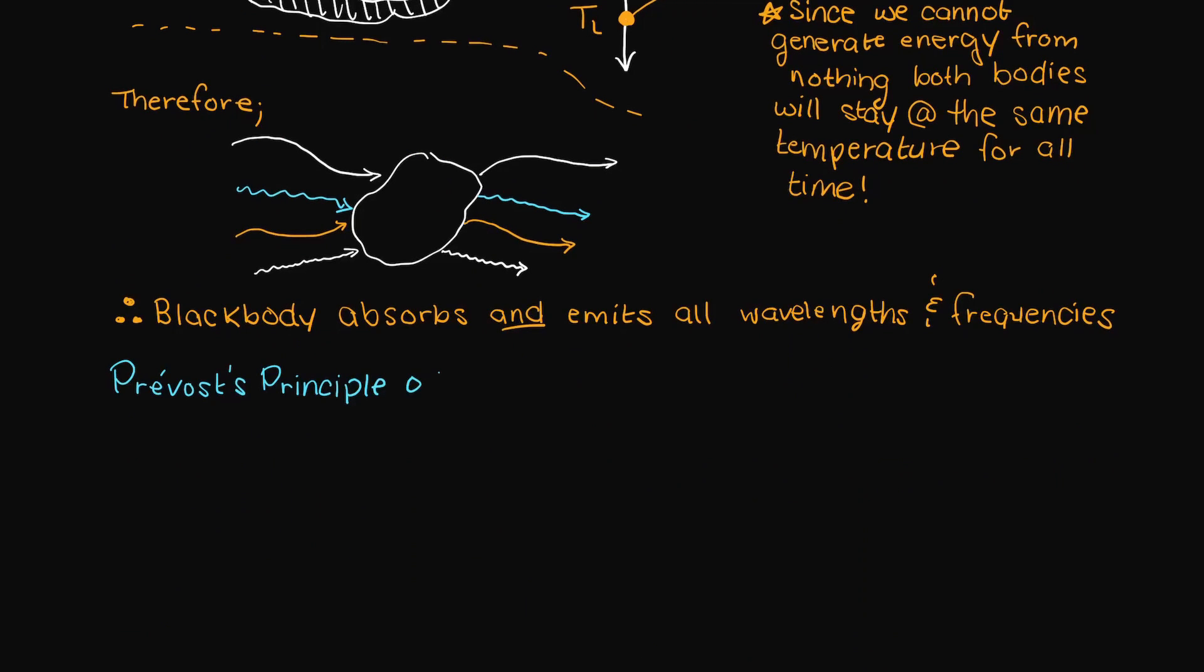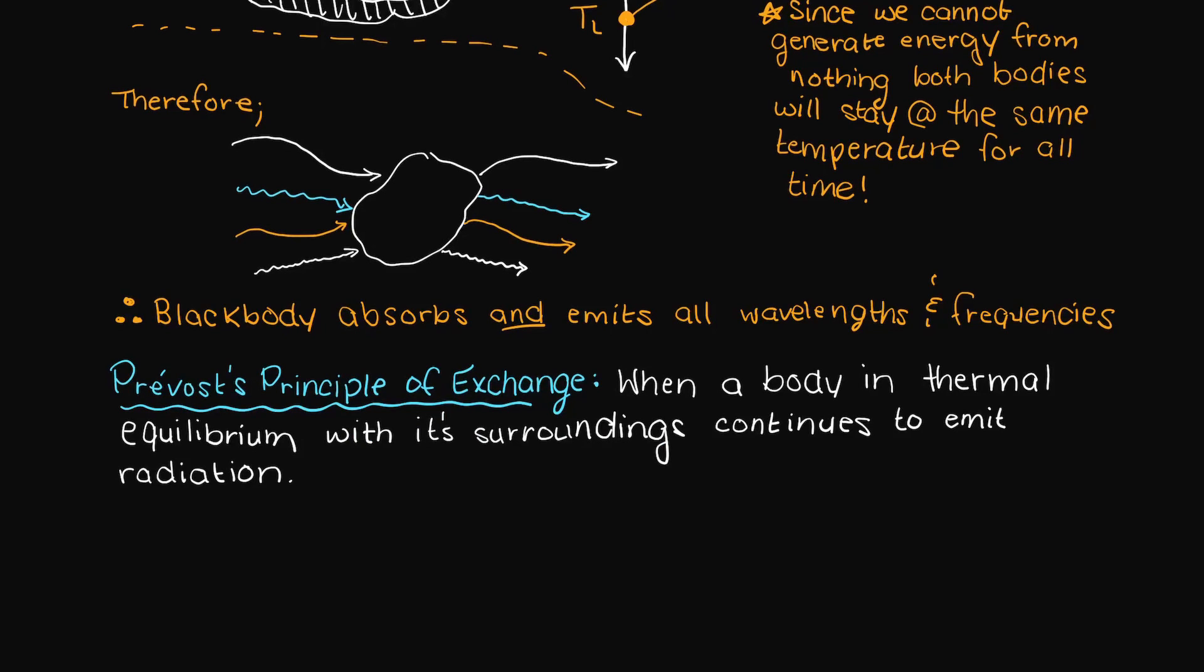This is called Provost's principle of exchange and occurs when a body in thermal equilibrium with the surroundings continues to emit radiation. Therefore, a blackbody in this state will absorb radiation at all wavelengths and frequency and emit radiation at all frequencies and wavelengths.